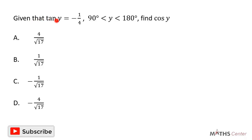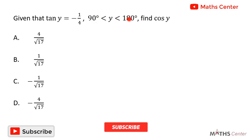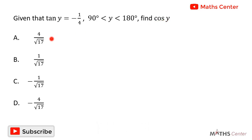Given that tan y equals negative 1 divided by 4 and y is between 90 degrees and 180 degrees, find cos y. This is a multiple choice question. The question tells us that tan y is negative 1 over 4 and y falls between 90 and 180 degrees. We are going to use this information to find cos y.